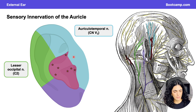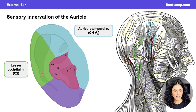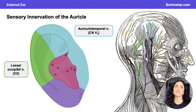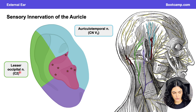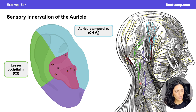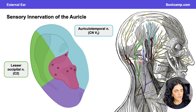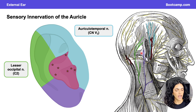The lesser occipital nerve supplies the more posterior aspects of the auricle, shown here in green. It originates from the cervical plexus, containing nerve roots from C2. The lesser occipital nerve emerges posteriorly along the sternocleidomastoid, ascends to give off branches supplying the posterior aspects of the ear and the mastoid region.